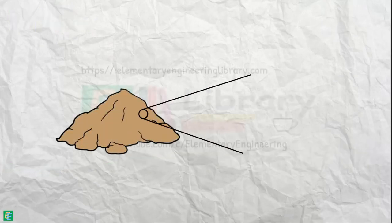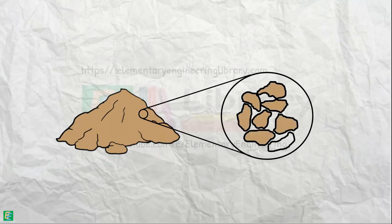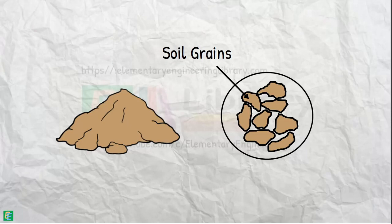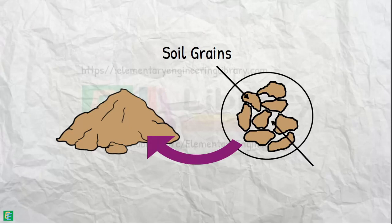A soil mass is composed of small solid particles which we call soil grains. These soil grains, when depositing in a soil mass, arrange themselves in a way that some amount of empty space is enclosed between them.